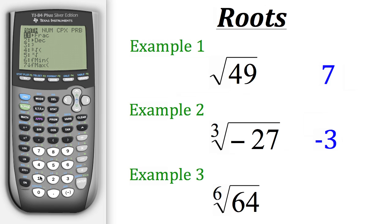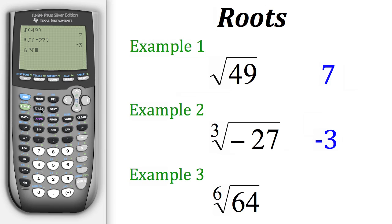For example, if we want to do the tenth root, we'd put in 10 and then go to that fifth option. For us, we need to do the sixth root of 64. So we'll go back and put in 6 because we want to do the sixth root, then go back to Math and go to that fifth option, and hit Enter. Now we have the 6 and then the x and the square root symbol, meaning we're doing the sixth root of whatever number we put in. In parentheses, let's put in 64. So now we're going to evaluate the sixth root of 64 — and as we can see, the sixth root of 64 is 2.